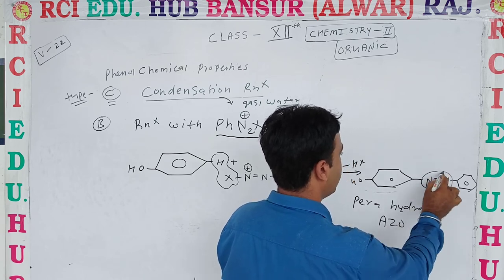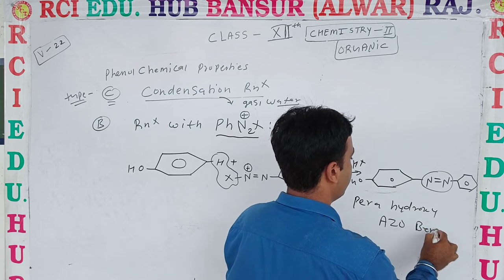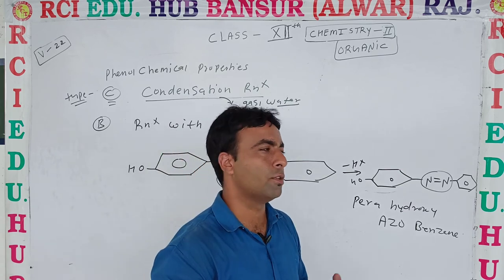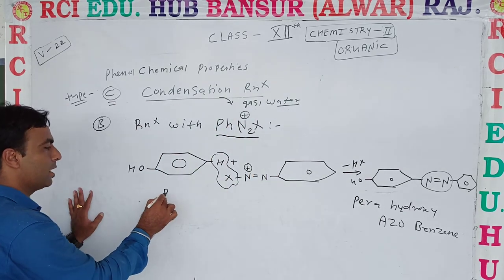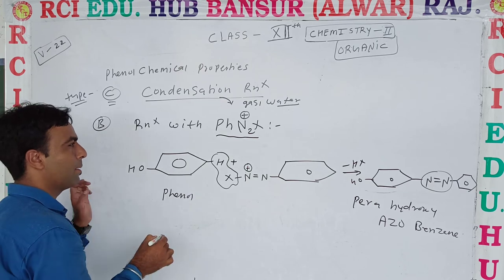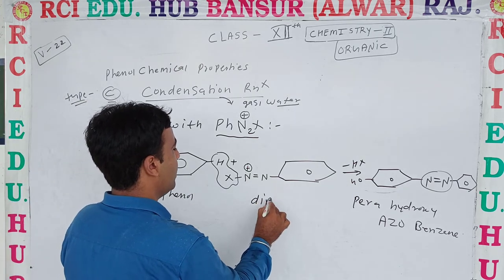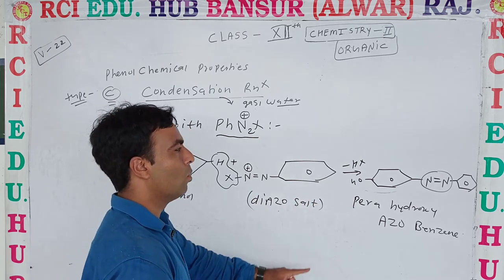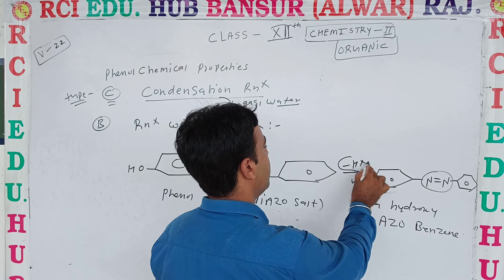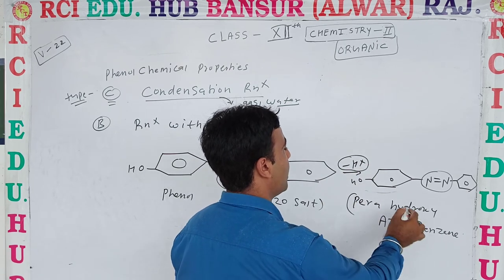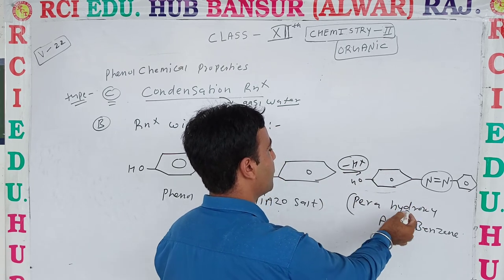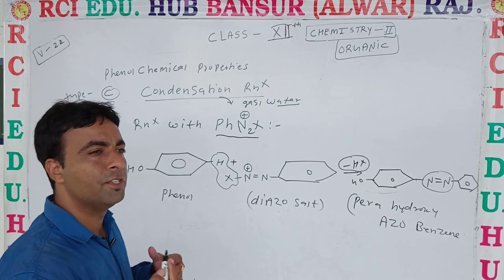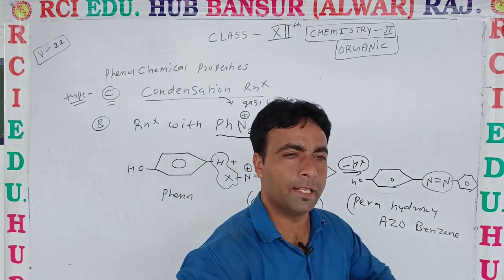The azo group — what does it mean? Azo. Benzene. So what is formed is parahydroxyazobenzene. You have seen this reaction. Phenol is reacting with diazonium salt. The reaction of phenol with diazonium salt — minus HX is removed, and what is formed is parahydroxyazobenzene — at the para position.